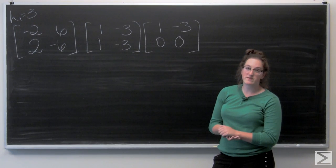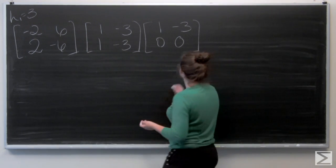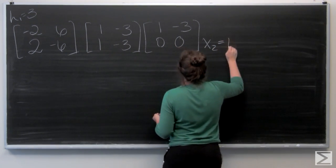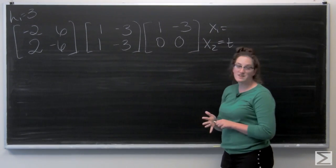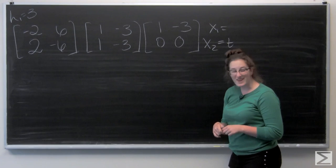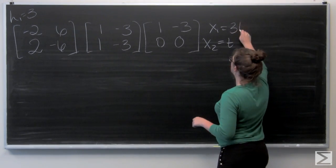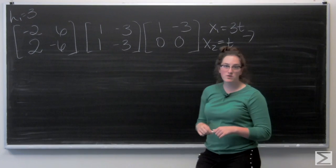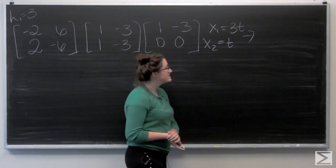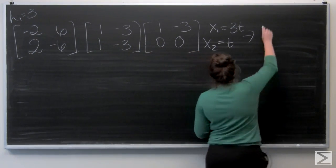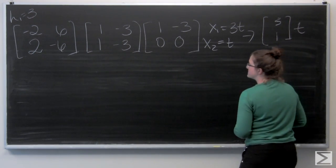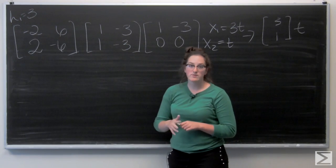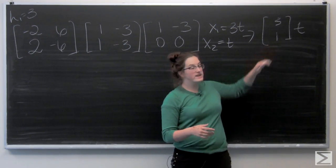And that leaves x1 minus 3t equals 0, x1 equals 3t. And I can write that in vector form as the vector 3, 1 times t. So that means that the eigenvector for lambda 1 equals 3 is that vector right here, 3, 1.